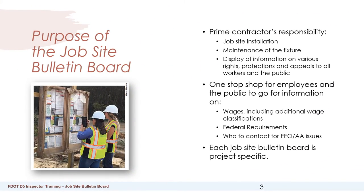The purpose of the Jobsite Bulletin Board: the prime contractor's responsibility is to make sure that the Jobsite Bulletin Board is installed, that they maintain the fixture, and they display the information on various rights, protections, and appeals to all workers and the public. The Jobsite Bulletin Board is a one-stop shop for employees and the public for information on wages, including additional wage classifications, federal requirements, and who to contact for any equal opportunity or affirmative action issues. Each Jobsite Bulletin Board is project specific.